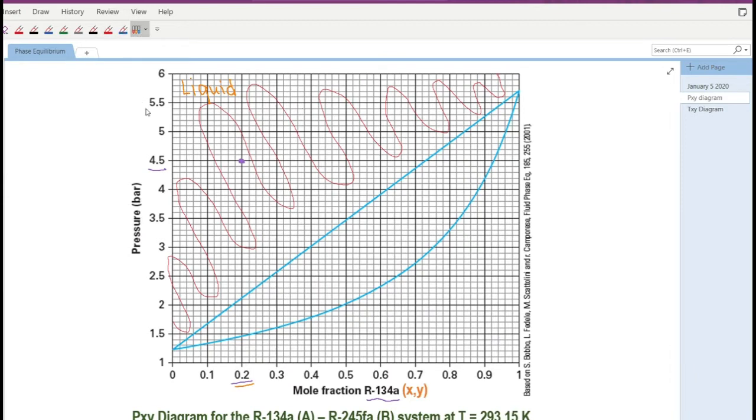On the other region of the PXY diagram, so let's say here. So if it so happens that your overall pressure and the overall composition of your mixture has points that hit in this green shaded area.